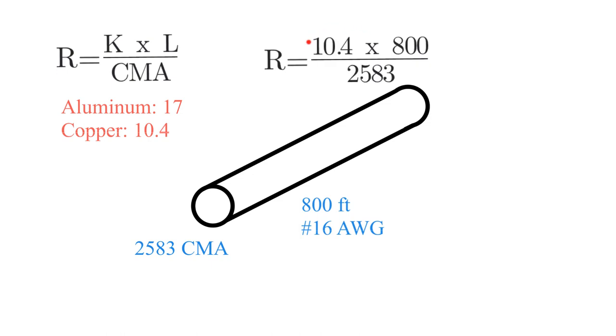So we plug all the numbers that we know into the formula: 10.4 is our K, 800 is our L, and our CMA is 2,583. Multiply those two, divide it by that, and we get a resistance of 3.22 ohms for that length.